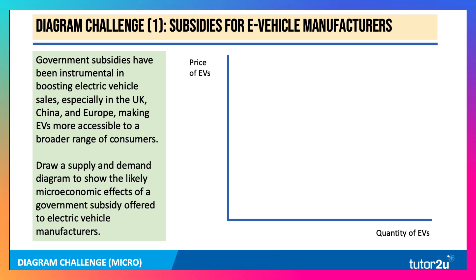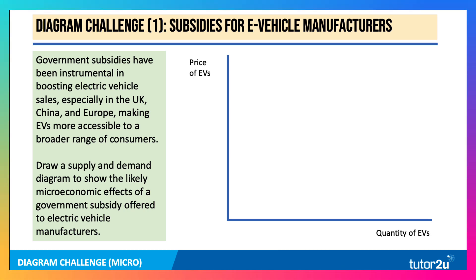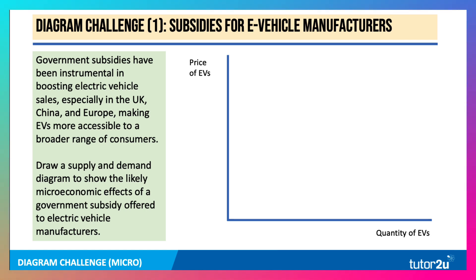The first diagram is subsidies for electric vehicle manufacturers. Draw a supply and demand diagram to show the likely microeconomic effects of a government subsidy offered to EV manufacturers. Press the pause button, have a go at the diagram, and then we'll walk through it together.